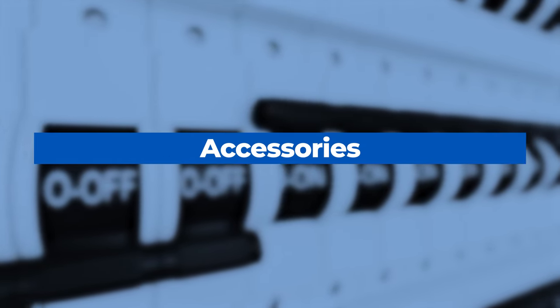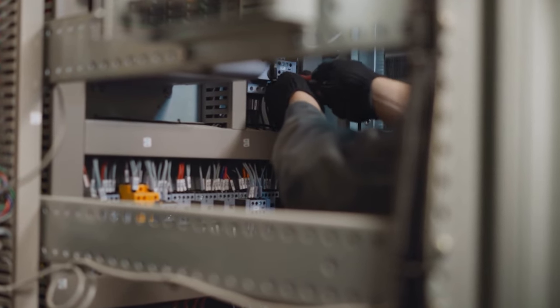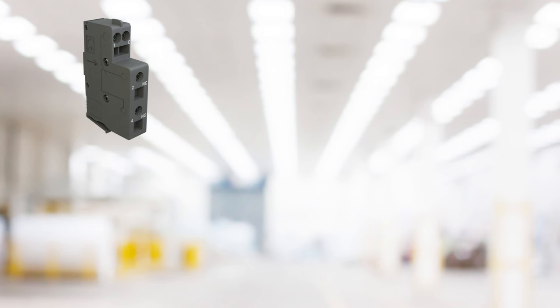Various circuit breaker accessories come into play to enable features such as remote indication and automatic operation. A few examples. The auxiliary switch indicates the breaker's present condition, open or closed.